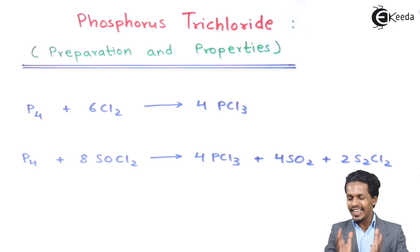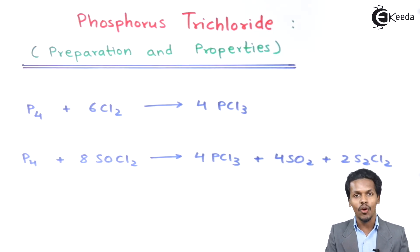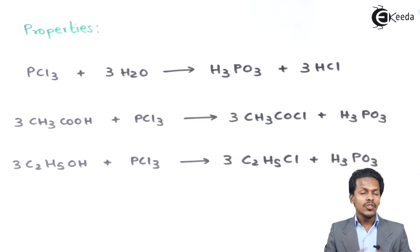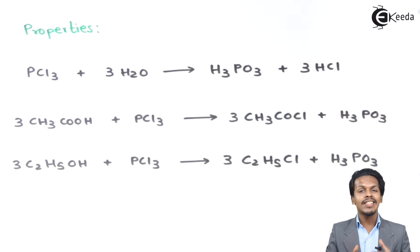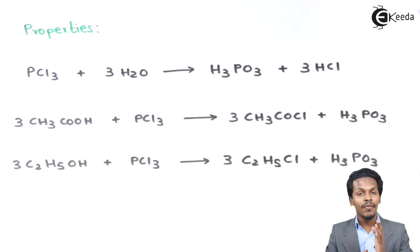This was related to the preparation of PCl3, and now let us move on to the properties of PCl3. Talking about PCl3, PCl3 is a very oily substance and it has a very strong pungent smell, which has a density of 1.6 gram per cm³.